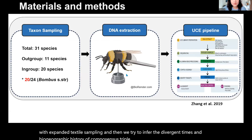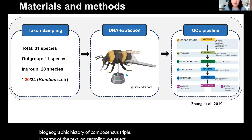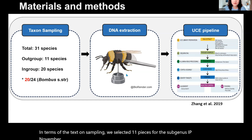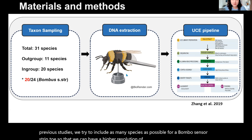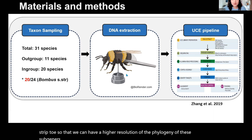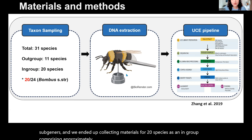In terms of the taxon sampling, we selected 11 species for the subgenera Alpinobombus and Pyrobombus because they are closely related subgenera based on previous studies. We tried to include as many species as possible for Bombus sensus stricto so that we can have a higher resolution of the phylogeny. We ended up collecting materials for 20 species as an in-group, comprising approximately 83% of the total taxa within this subgenus.